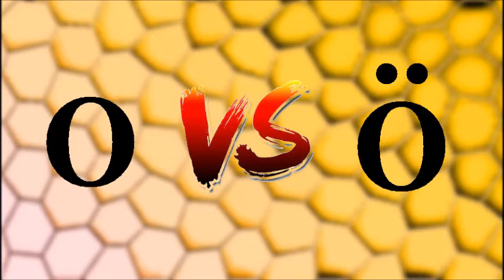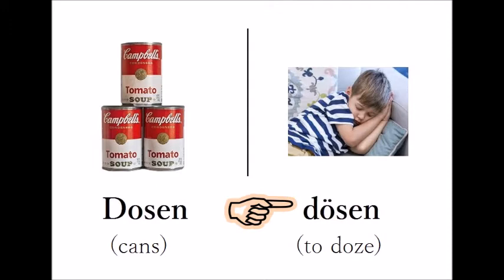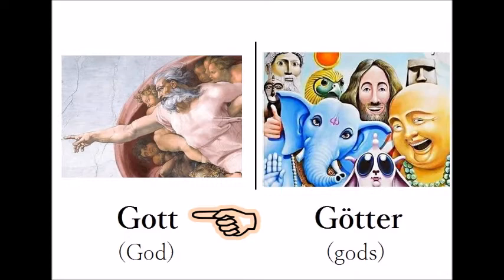O versus Ö. Dosen — Dösen. Dosen — Dösen. Gott — Götter. Gott — Götter.